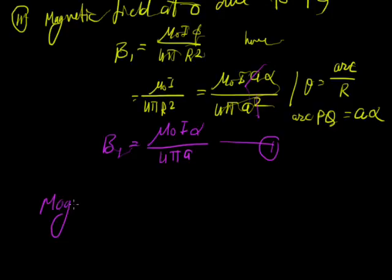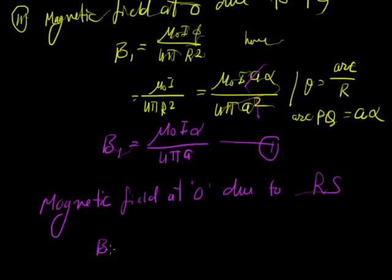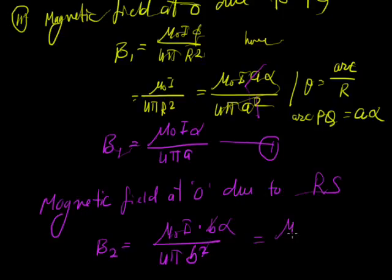Similarly, magnetic field at O due to RS is given by B2 equals mu_0 I upon 4 pi B square. Here B is the radius and the segment RS equals B alpha. That is B alpha. So B2 equals mu_0 I alpha upon 4 pi B.